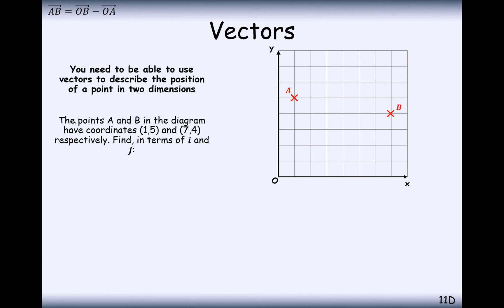Let's have a look at this question. The points A and B on the diagram have coordinates 1, 5 and 7, 4. Find in terms of i and j the position vector of A. Well, that's just going to be 1i plus 5j.